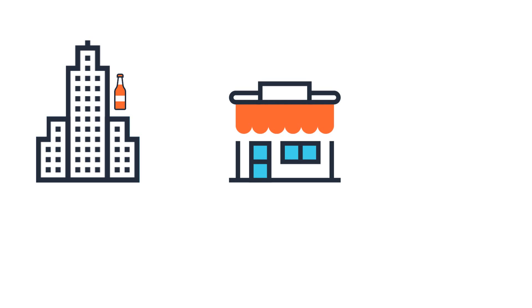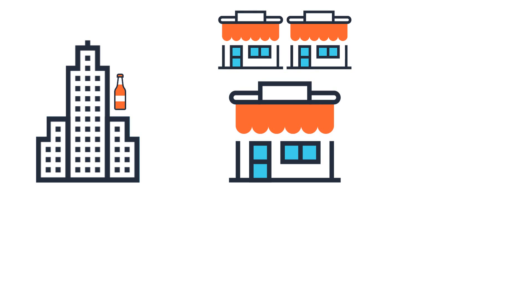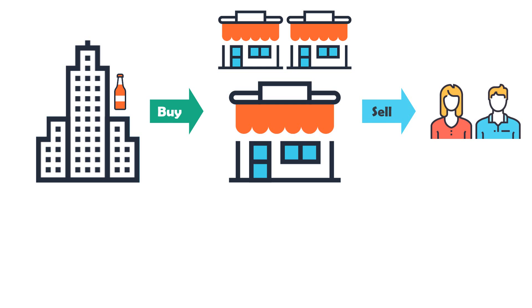Suppose there is a manufacturer. This manufacturer produces goods, such as juice. This manufacturer sells the juice to a supermarket, but it may also be that the manufacturer sells the juice to various supermarkets. The supermarket buys the juice from the manufacturer and sells it back to the consumer — these are people, like you and me.